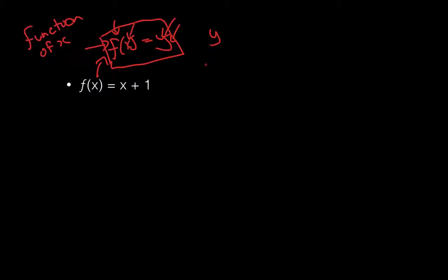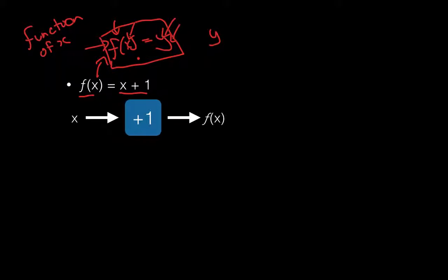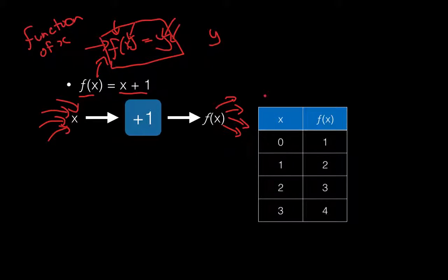So let's try and describe the relationship here. f of x is equal to x plus 1. If we take some x value — any x value — and we add 1 to it, we get f of x. That's all this is saying. Now what if we plugged in a whole bunch of x values and added 1 to them to get a whole bunch of different f of x's? Well, we get a table like this. If we plug in 0, we get 1; plug in 1, we get 2; 2, we get 3; 3, we get 4. These are just the products of this relationship.